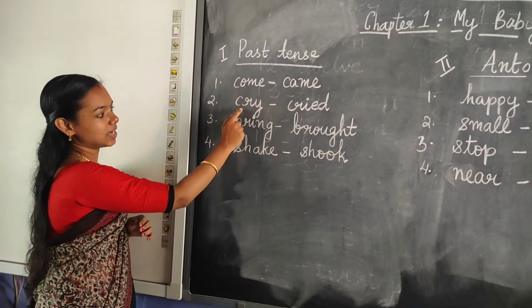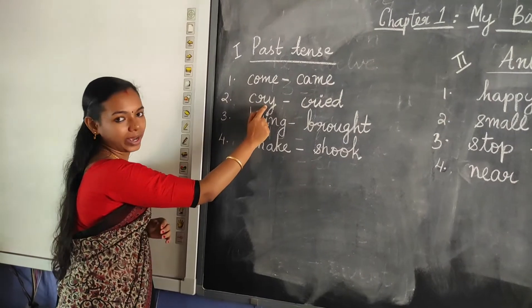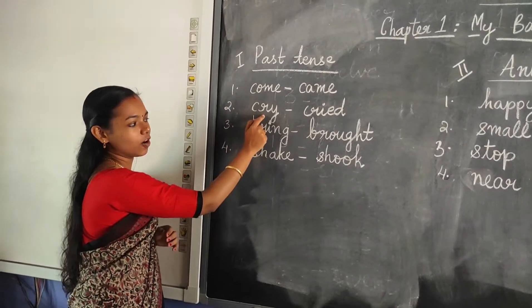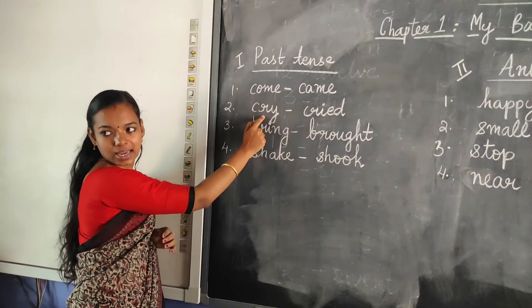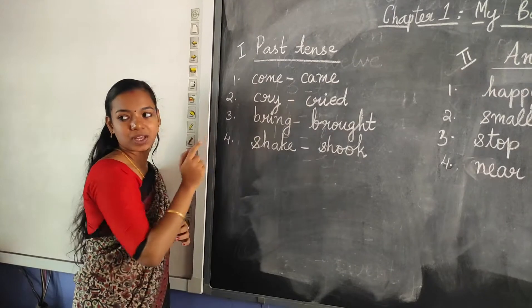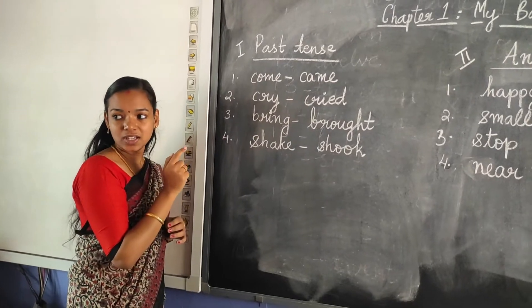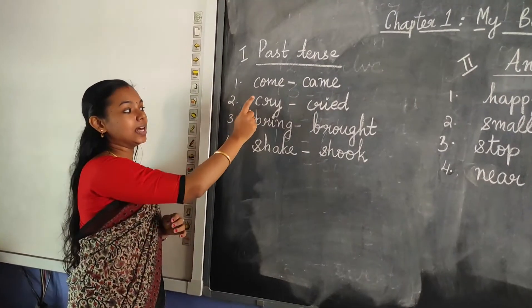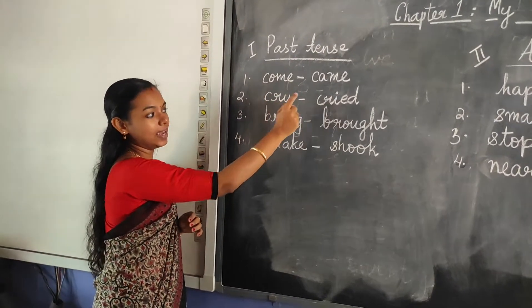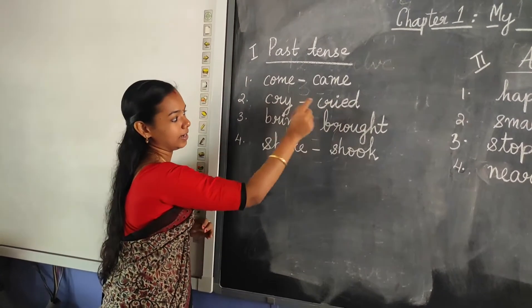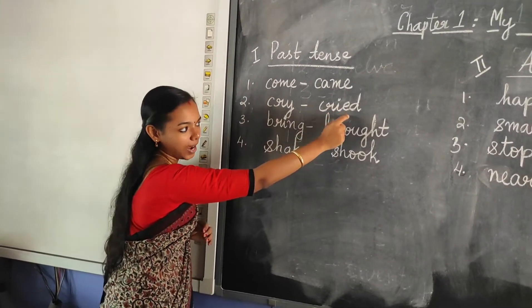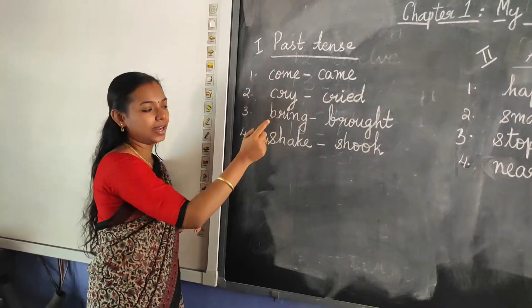Next: cry. C-R-Y, cry. The past tense of cry is cried. Cry, cried.